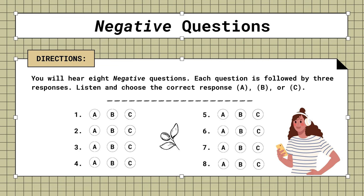3. Can't you drive any faster? A. I passed my test six years ago. B. Sorry, but the speed limit is 55. C. That'll be the principal's car.